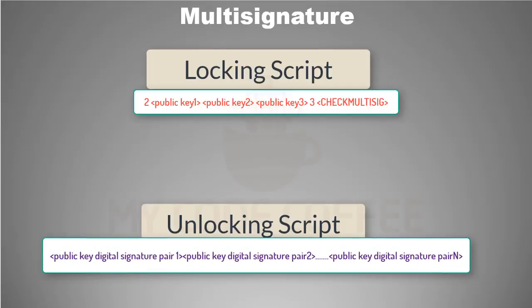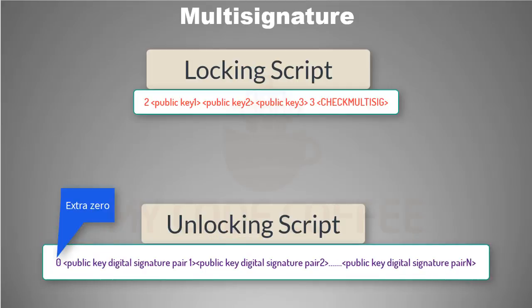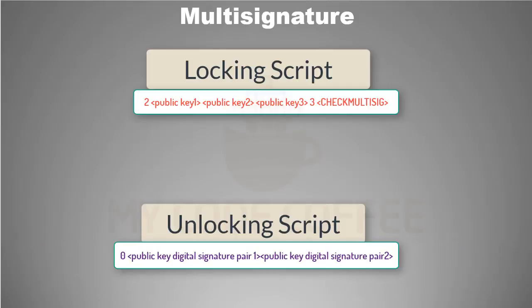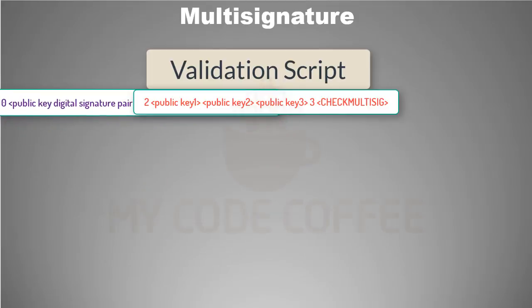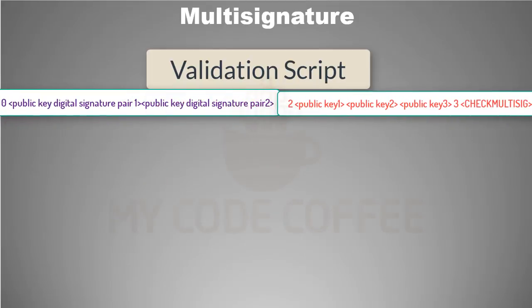Actually, because of a bug in the CHECK_MULTISIG execution, the unlocking script will have an extra zero at the start, so it will look like this. I will talk about that bug when I explain the execution of CHECK_MULTISIG. In our two-of-three example, the unlocking script will look like this. The combined validation script is the unlocking script followed by the locking script, and the result will be true only if the unlocking script satisfies the condition set by the locking script.